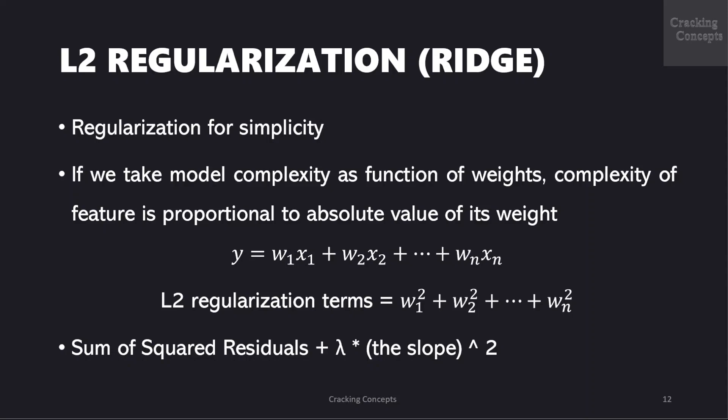Now let us look into L2 regularization which is also known as ridge regression. It is also known as regularization for simplicity. If we take the model complexity as a function of weights the complexity of a feature is proportional to the absolute value of its weights which is given by y equals w1x1 plus w2x2 plus etc plus wnxn. Now the L2 regularization terms will be the sum of squared values which are w1 square plus w2 square plus etc plus wn square.